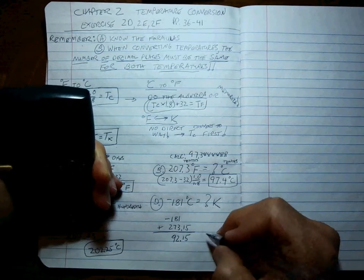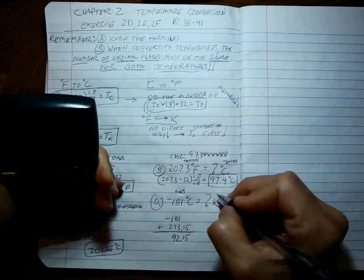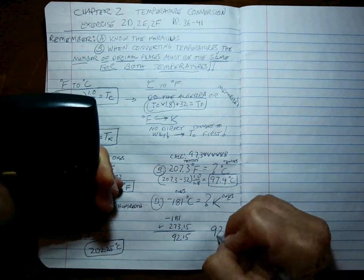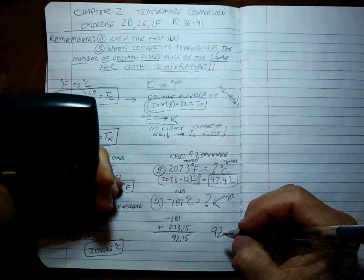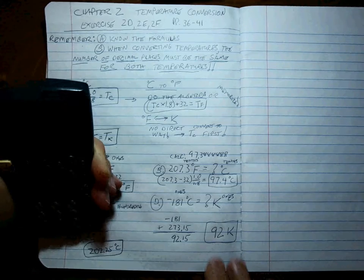What are we going to write for an answer? This is known to the ones place, is it not? So, this answer has to be to the ones place. Okay, 92 Kelvin. That's the correct answer.